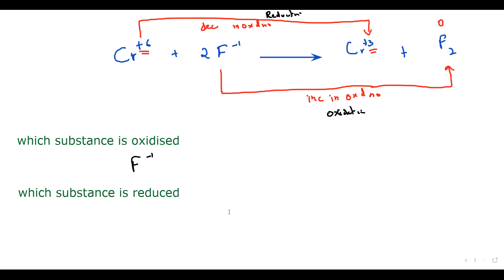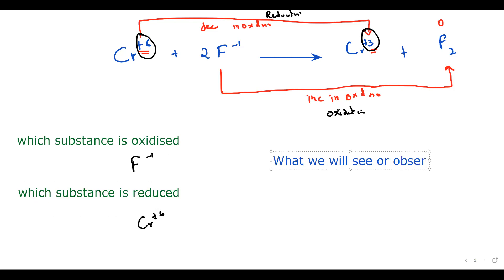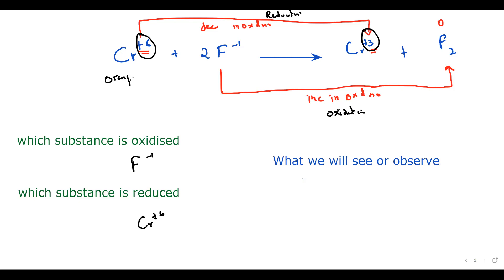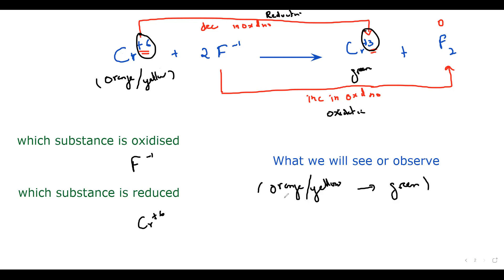Which substance is reduced? Chromium — it was +6 and turned into +3, so chromium (+6) is reduced. What is the observation? Chromium +6 is orange or yellow, and chromium +3 is green in color. So we will observe that the orange or yellow color turns into green. That is the observation when this reaction occurs.